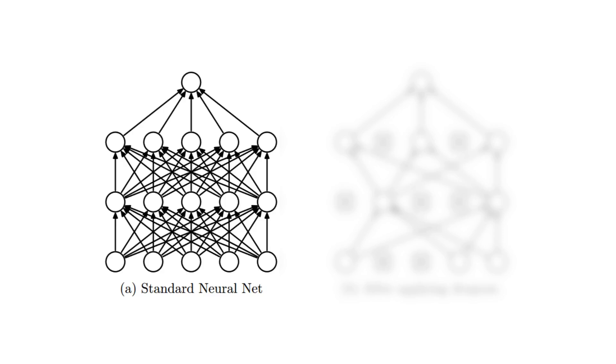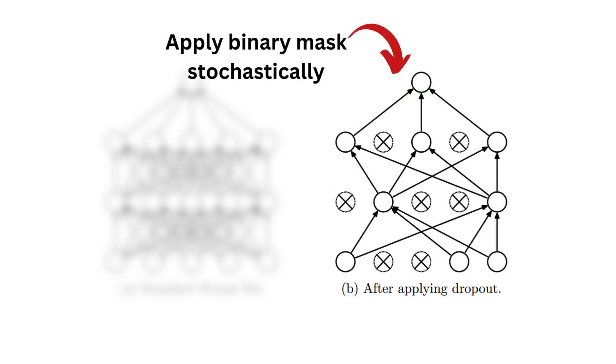One simple way to regularize a neural network is by using dropout. The method is simple: stochastically apply a binary mask over each neuron to zero out their output. This helps prevent overfitting.